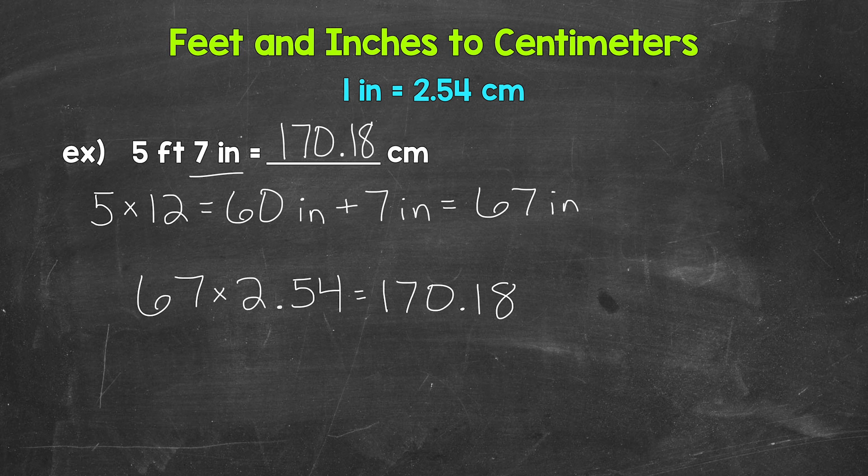And that's it. Convert the feet and inches to just inches, then convert that to centimeters by multiplying by 2.54. That's how to convert feet and inches to centimeters.